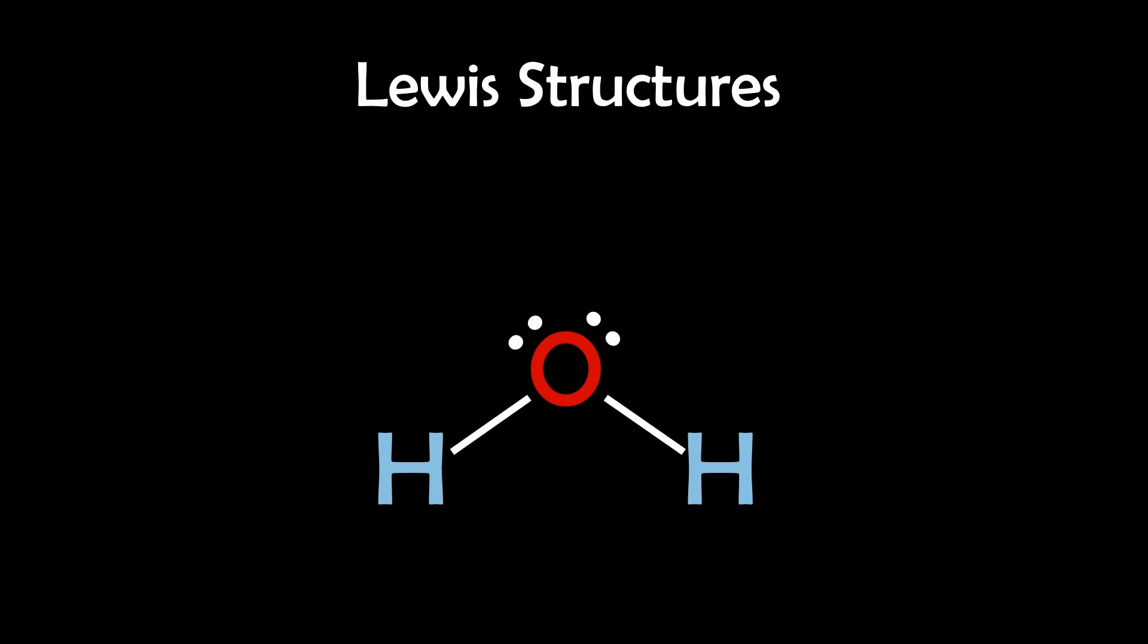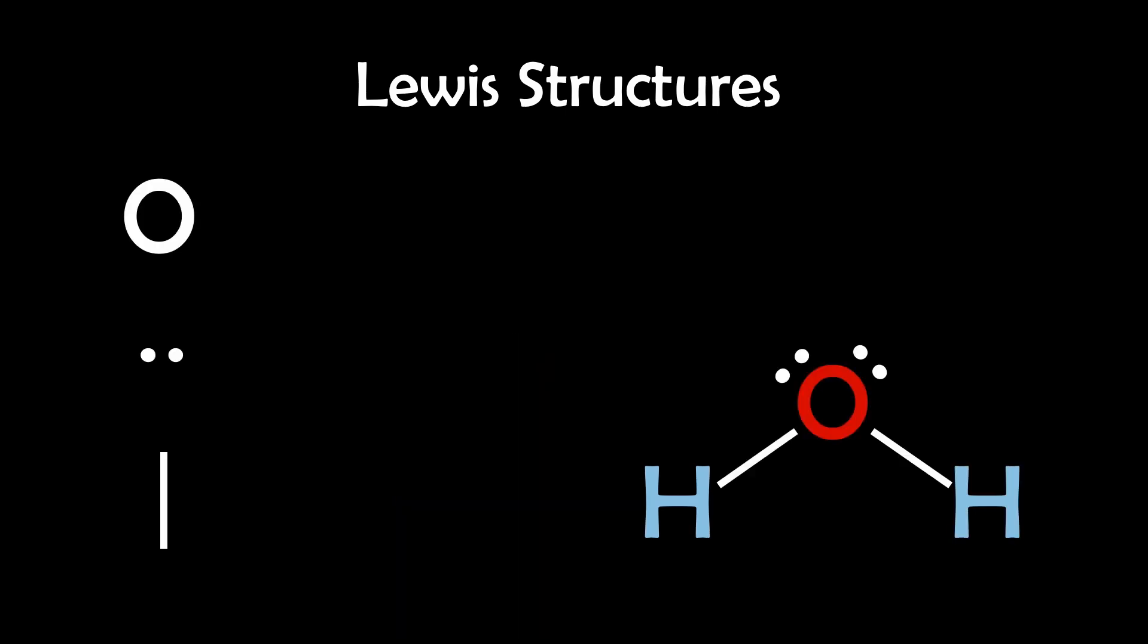Lewis structures use elemental symbols to represent the nucleus and dots to represent valence lone pairs and lines to represent valence bonds. The primary purpose of Lewis structures is to visualize the bonding between atoms and the presence of valence lone pairs of electrons.